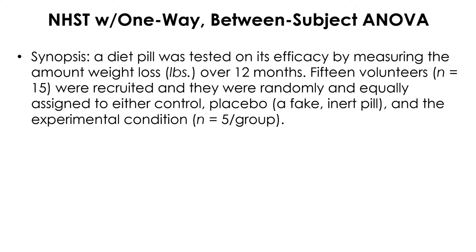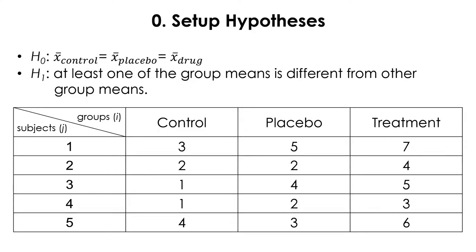The factor here is the drug condition: level one is control, level two is placebo, and level three is the actual drug condition. This is a one-factor between-subject design with three levels. The null hypothesis is that all group means are the same — no difference in weight loss across conditions. The alternative hypothesis is that at least one group mean is different from the other group means.